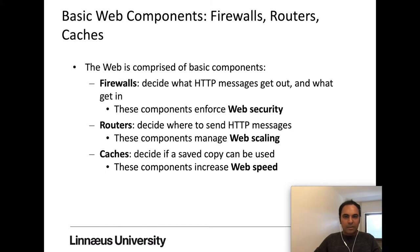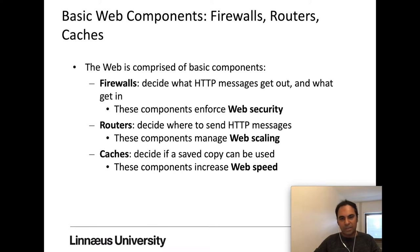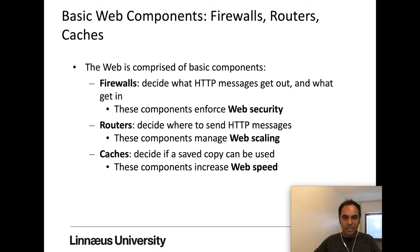In web applications there are three basic components: firewalls, routers, and caches. What a firewall does is decide which HTTP message will be accepted and sent both from and to your browser and the application server. The firewall basically controls web security — in terms of your machine or browser, and also in terms of the application server or web server.